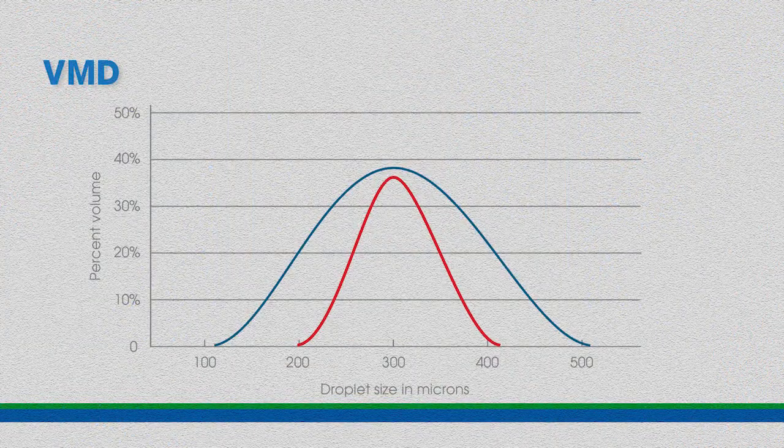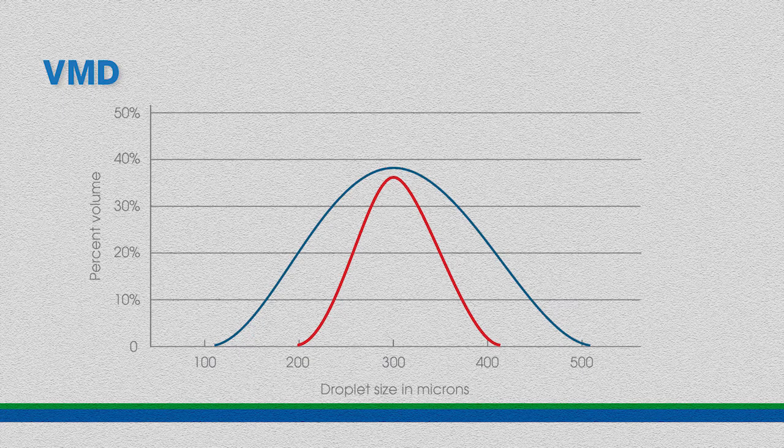One term you might see used is VMD — Volume Median Diameter. It is the diameter of the spray droplets where half of the spray volume came out in smaller droplets and the other half came out in larger droplets. So if I had a nozzle that produced a VMD of 400 microns and I sprayed out 10 gallons, 5 gallons came out in droplets smaller than 400 microns and the other 5 gallons came out in droplets bigger than 400 microns. It's the median droplet size based on the volume being sprayed.